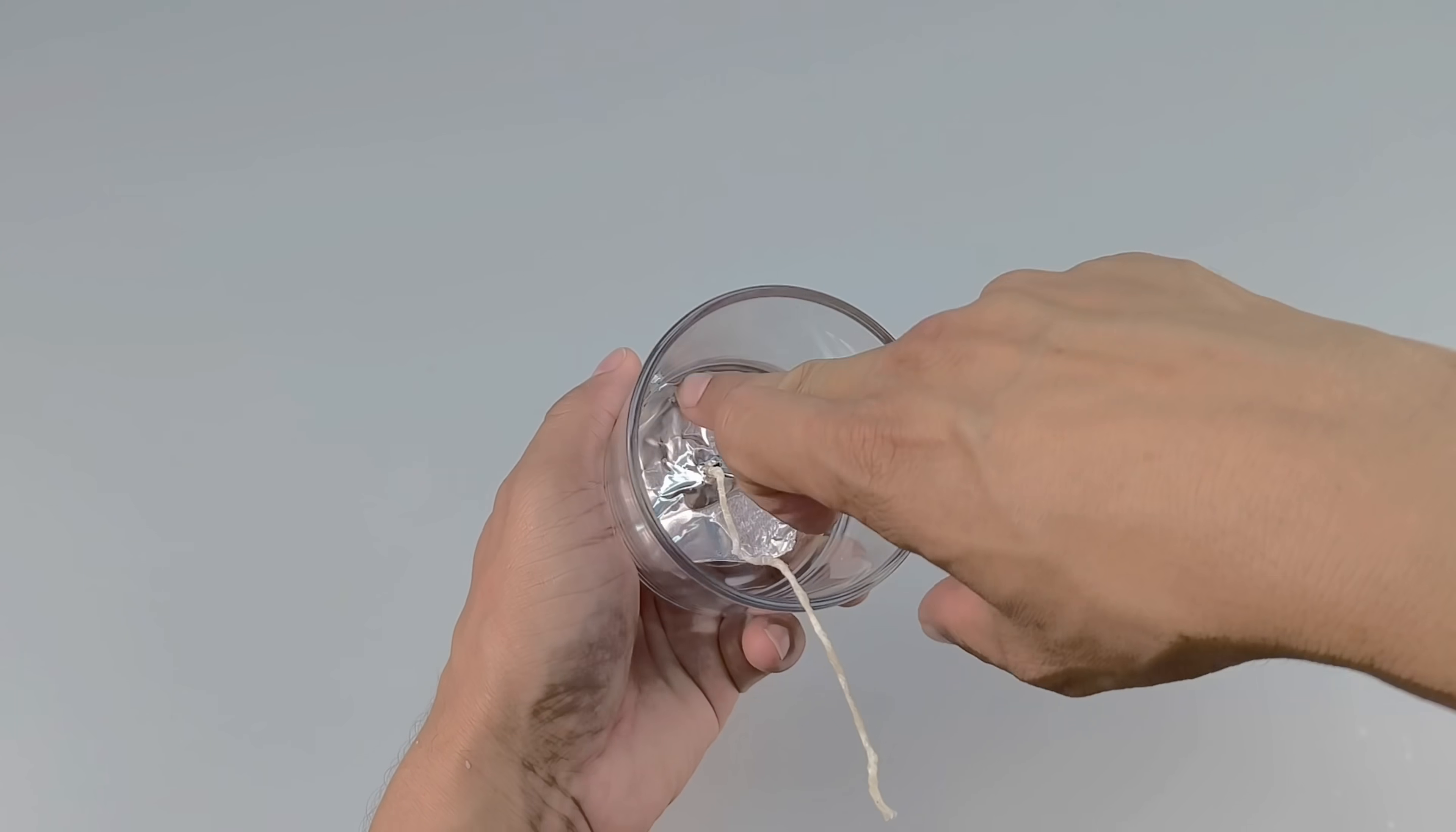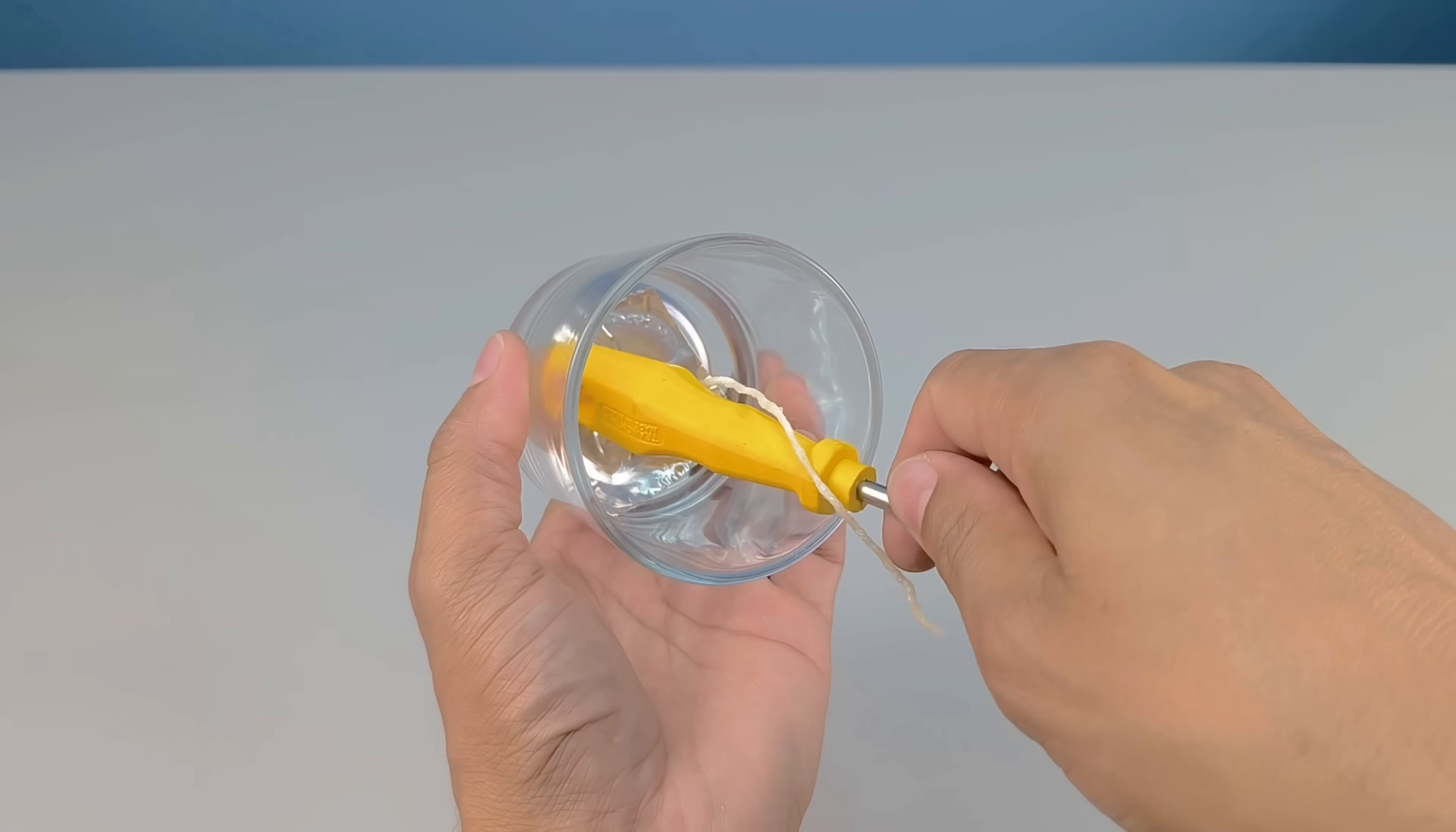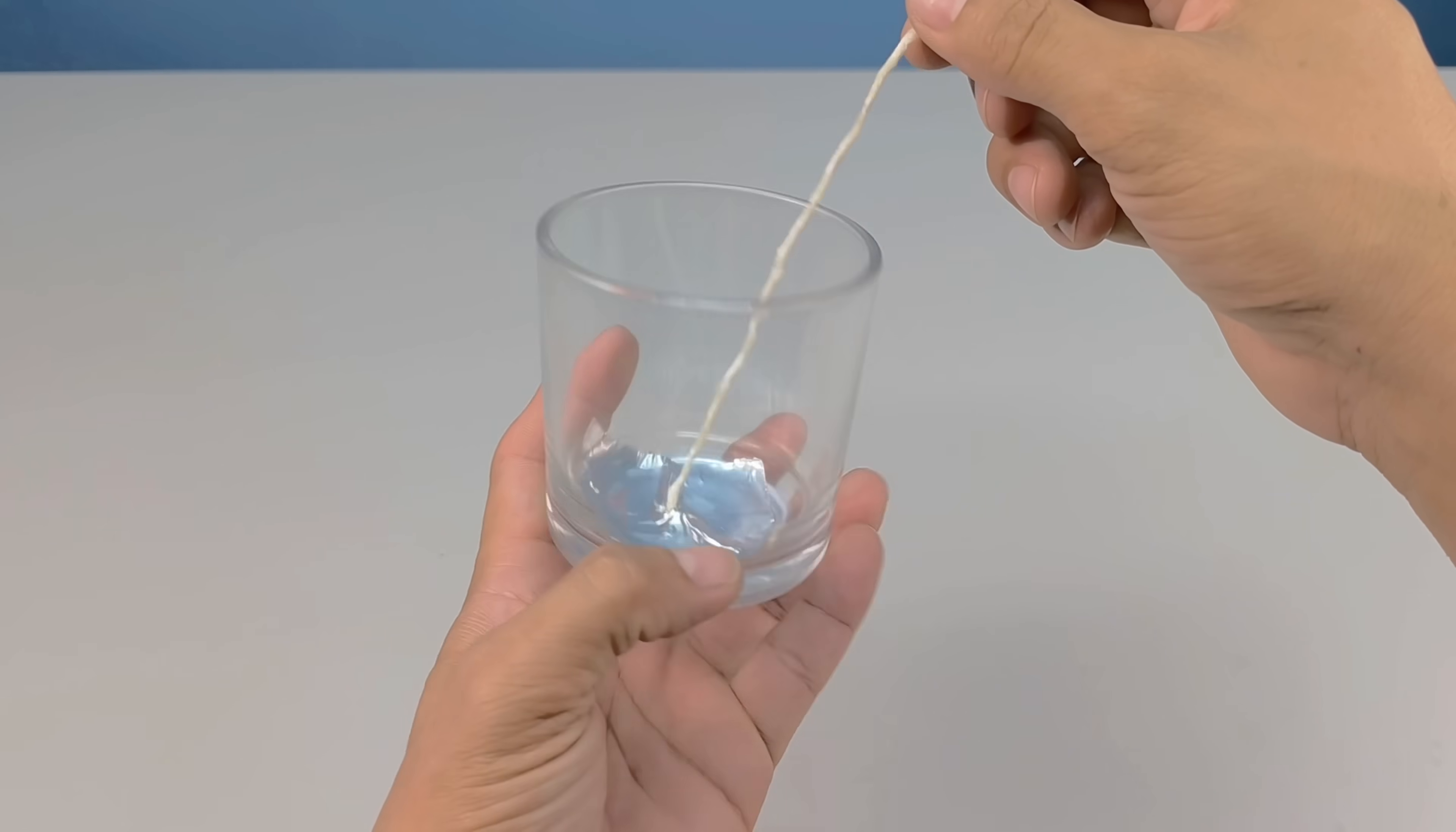The most important thing here isn't the technique, but the result. The wick needs to be centered, in the exact position, and firmly attached. This ensures the candle burns evenly, preventing it from melting on just one side or going out easily.